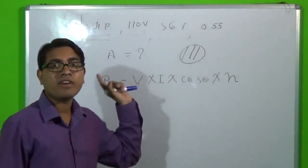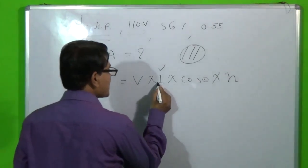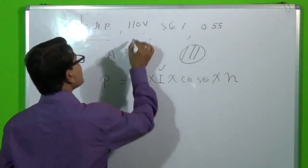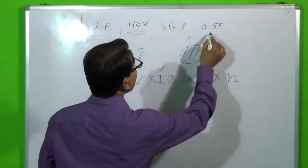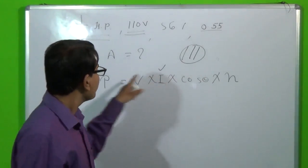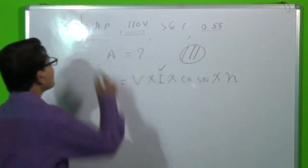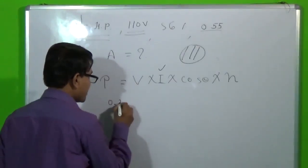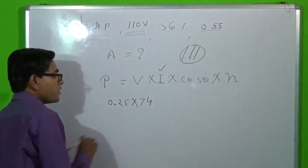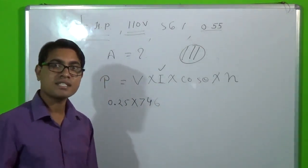We will use that formula and find out how much current our motor is taking from the supply. The power the machine is taking is 1/4 HP, the voltage is 110 volts, the power factor is 0.55, and the machine is 56% efficient. We will put all these values into the formula to find the value of current I. 1/4 HP means 0.25 HP, and to convert this into watts we multiply by 746 watts, because 1 HP equals 746 watts.